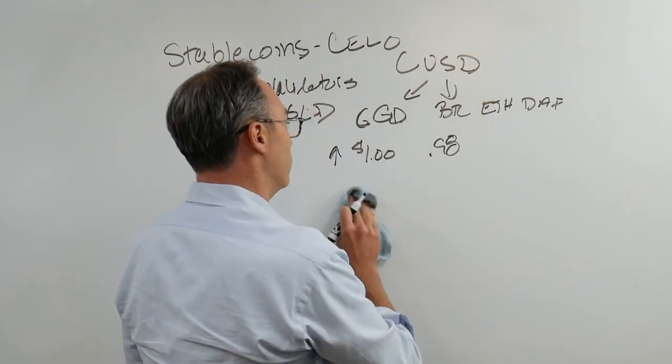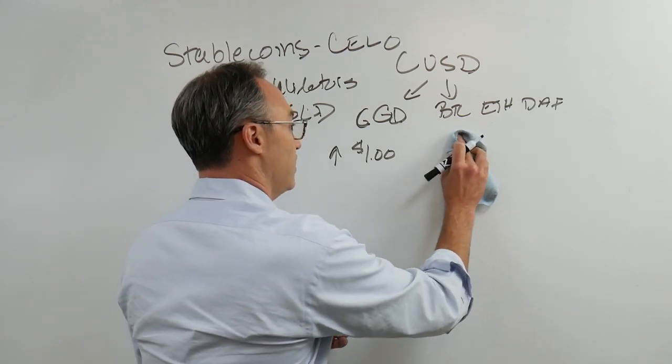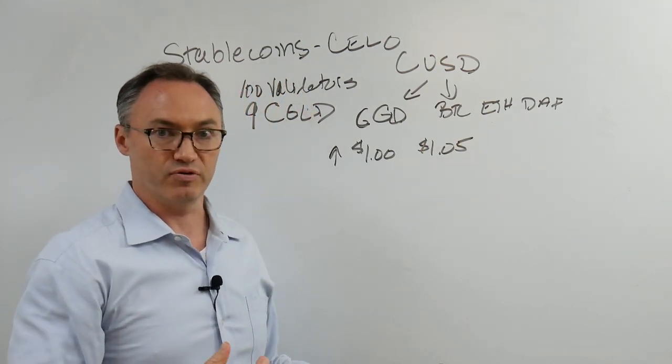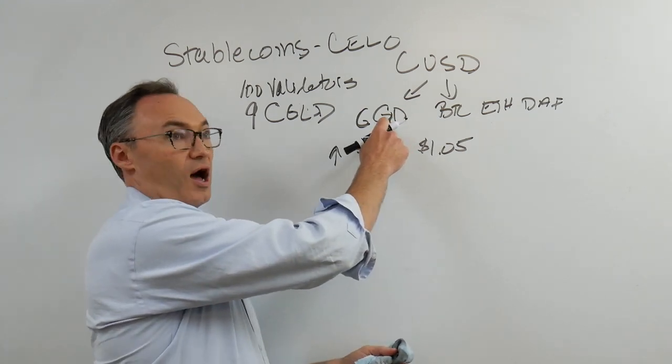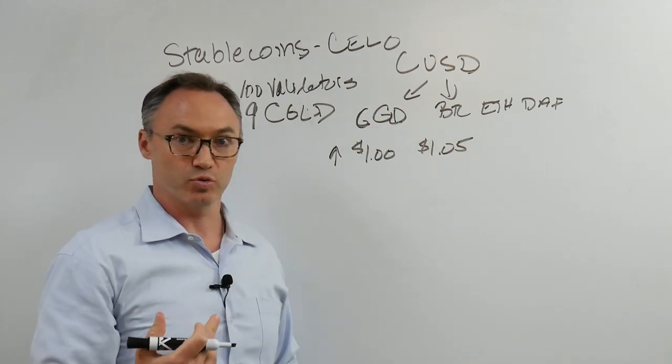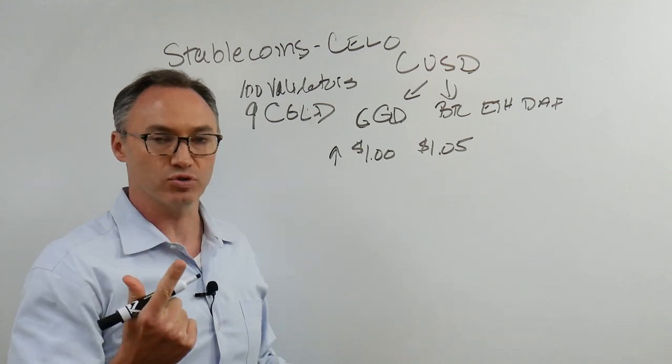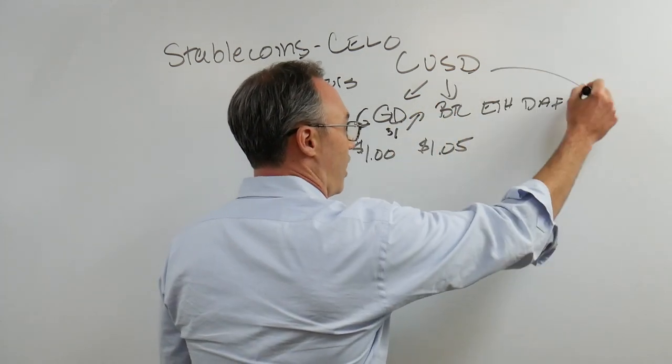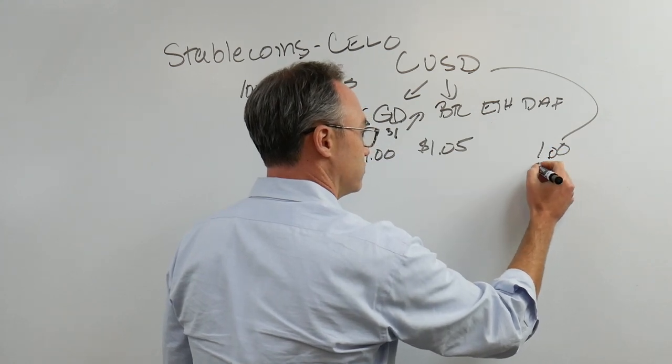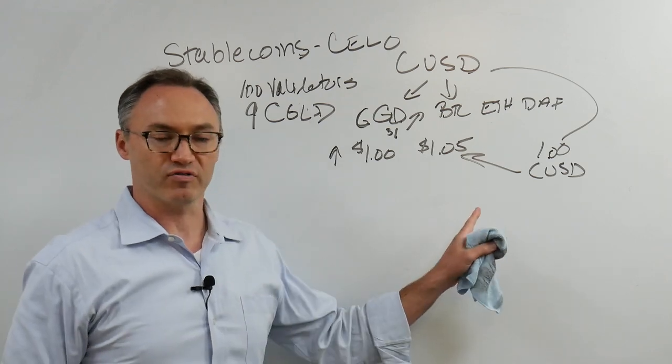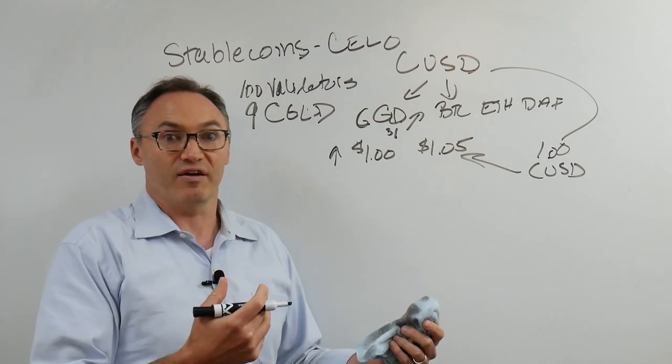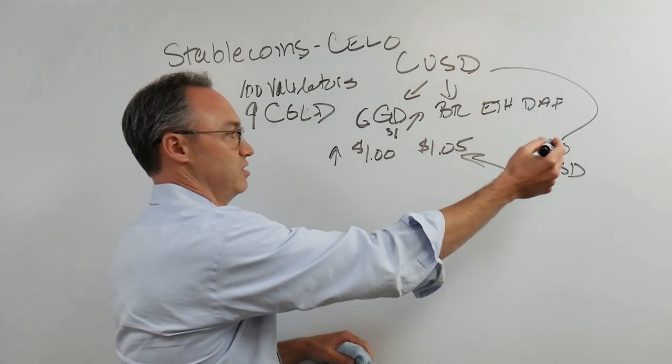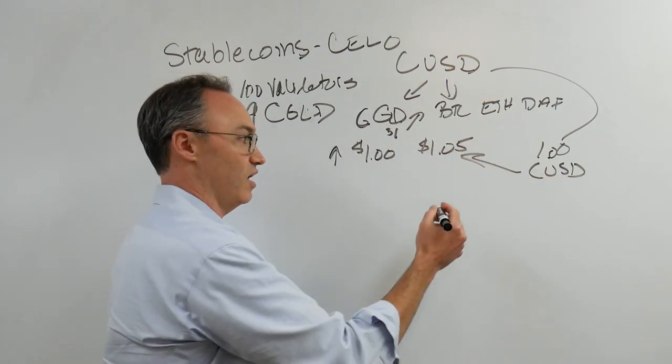What's the value of my having CGLD? What can I do? Let's say that demand goes up and the price goes up to a dollar five again and I'm holding CGLD. When I hold the Celo gold, I can always sell a dollar's worth of Celo gold into the reserve and mint one CUSD, one dollar's worth of CUSD. I get one CUSD. I can go sell it on the open market for a dollar five.